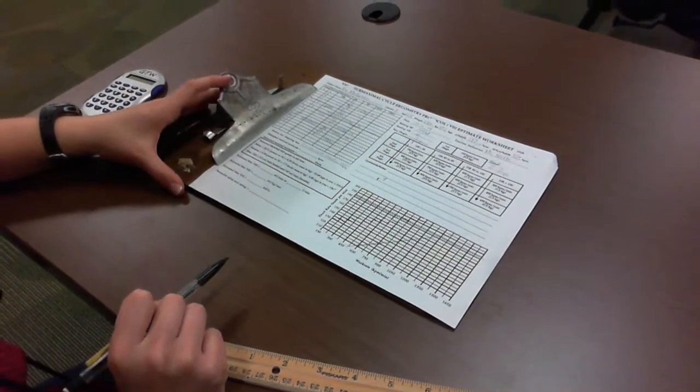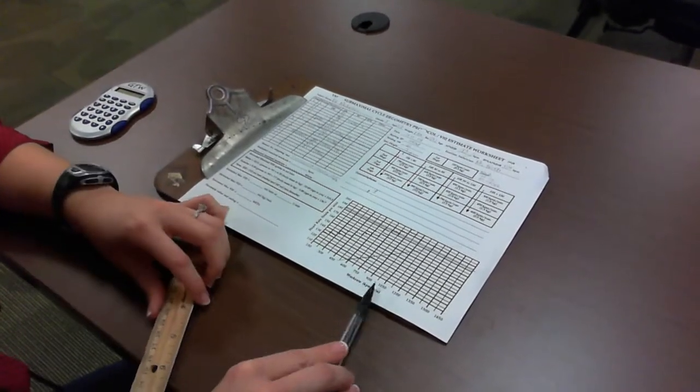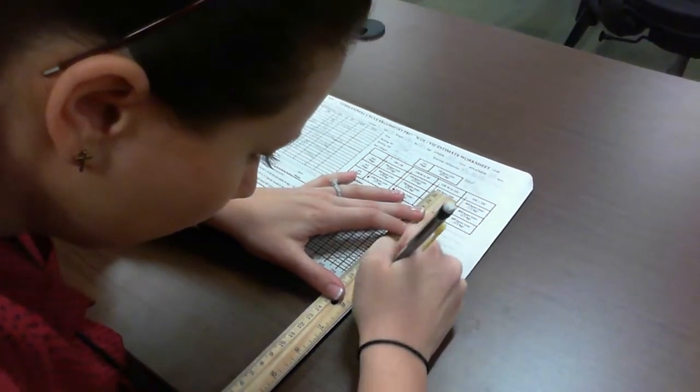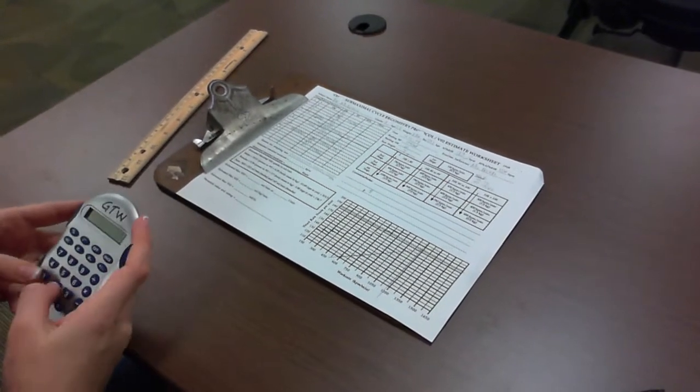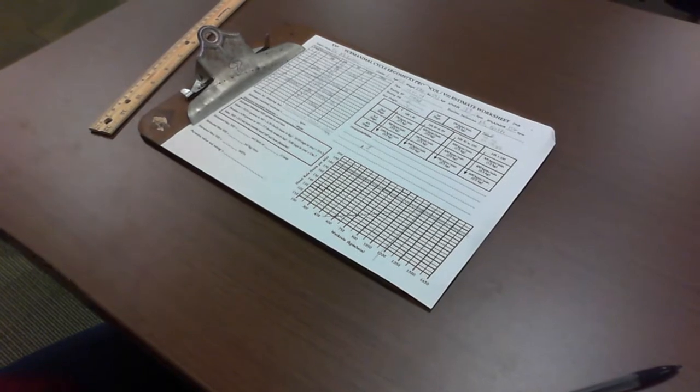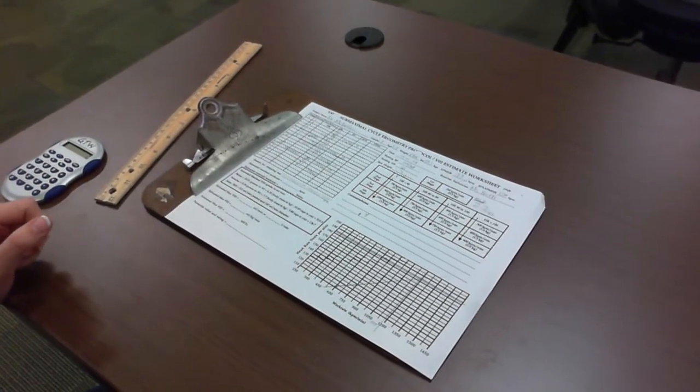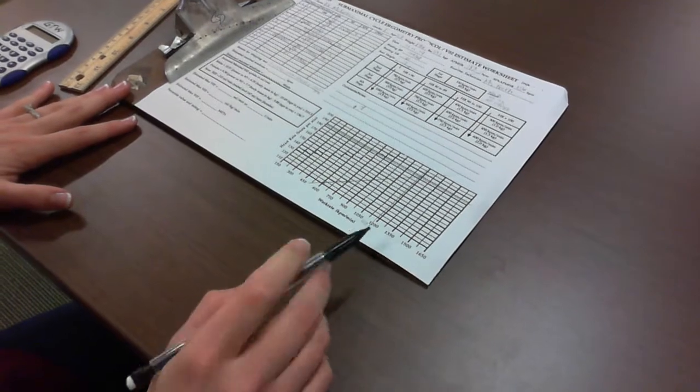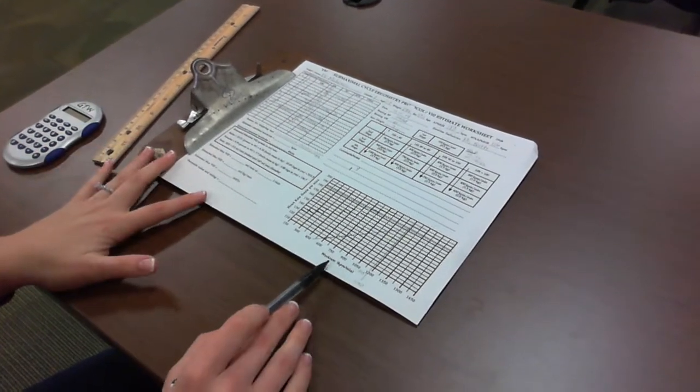So now we have our two lines. The next step is to note where the two lines intercept, and we're going to draw a vertical line straight down to get her estimated max work rate. So if this middle line was 1125, we're going to estimate that it's almost 1200, maybe 1190. So that's going to be her estimated max work rate.